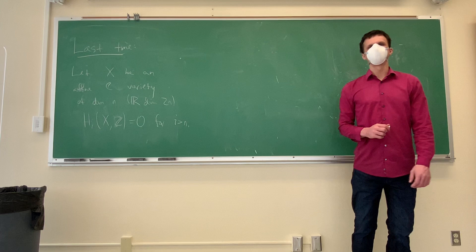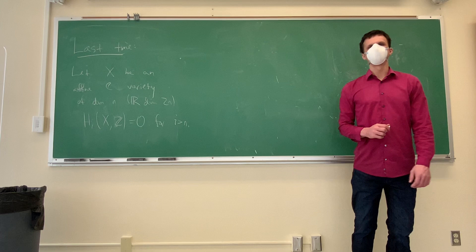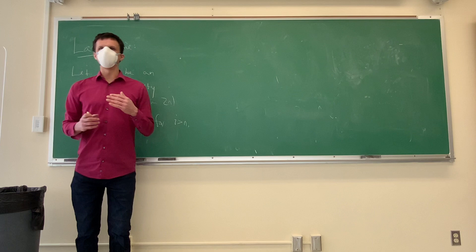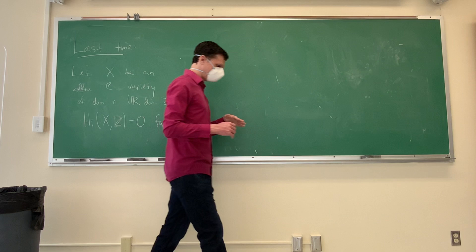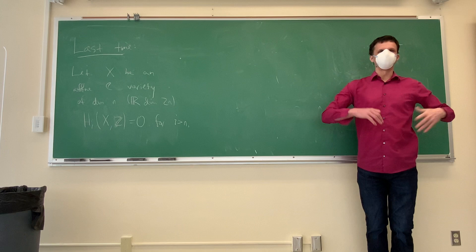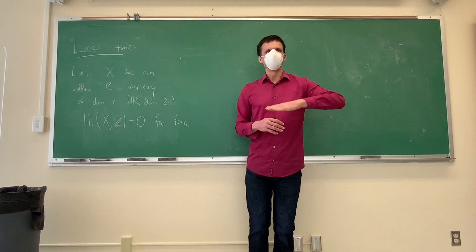The way we proved that was by using Morse theory. The idea is that you have some Morse function from your space to the real numbers, which you can view as a way of building the space piece by piece. As a water level rises, the topology doesn't change unless you're passing a critical point.